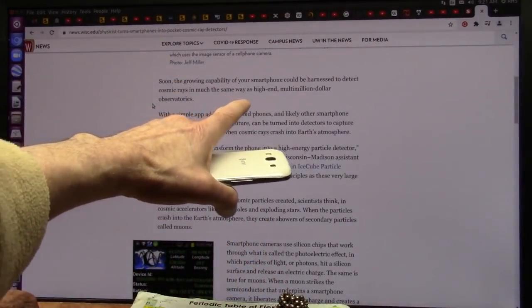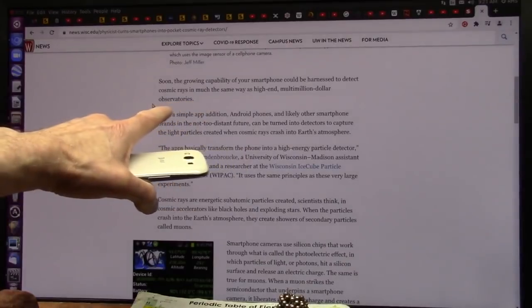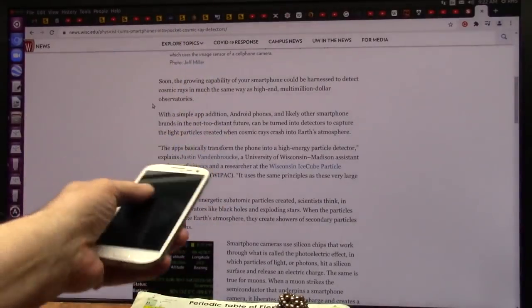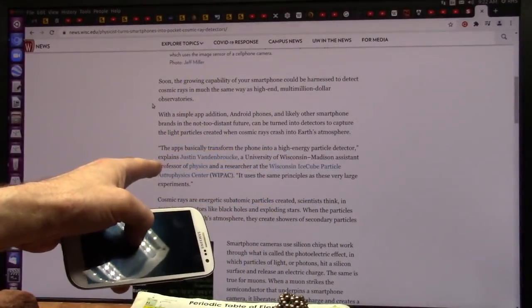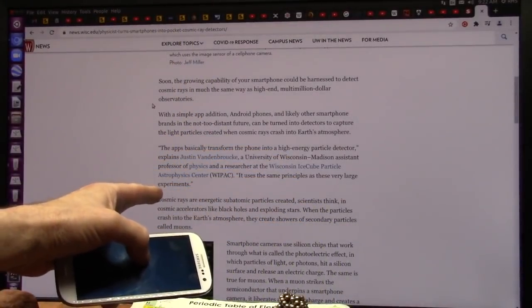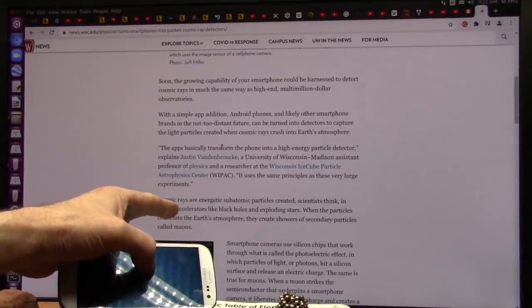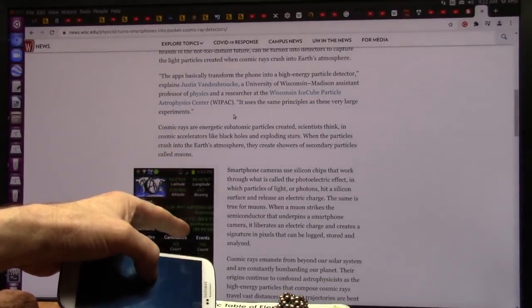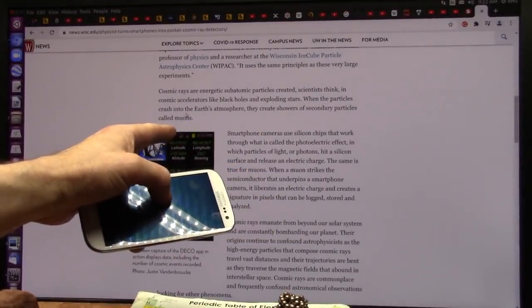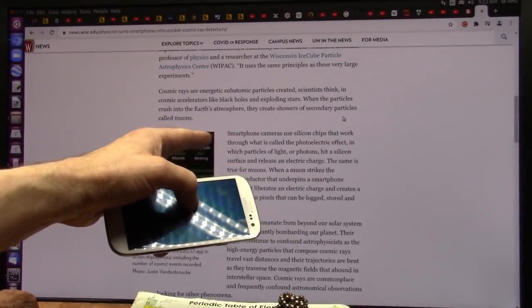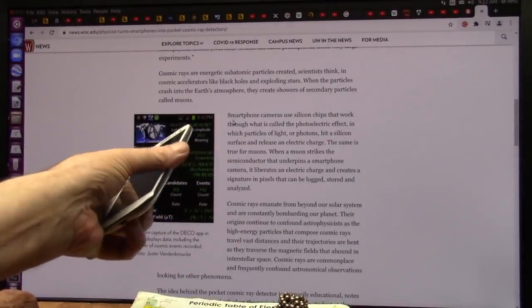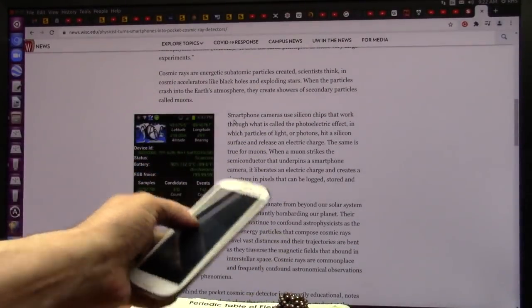This is the phone from 2012. They say that they use the same technology as the high-end multi-million dollar observatories. The apps basically transform these phones into a high-energy particle detector. It uses the same principles as very large experiments. What they're looking for is muons. When particles crash into earth, they create showers of secondary particles called muons.